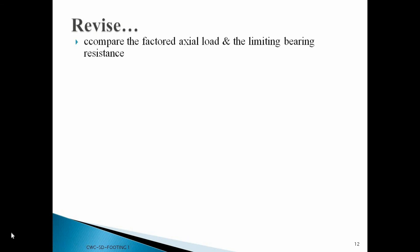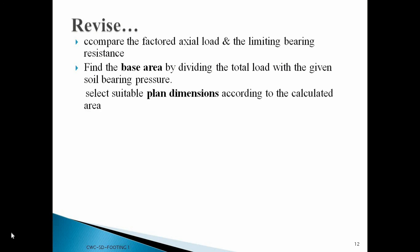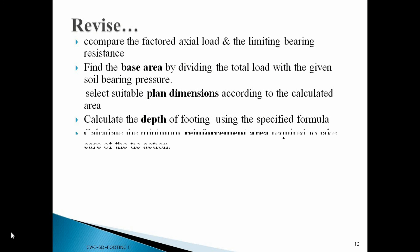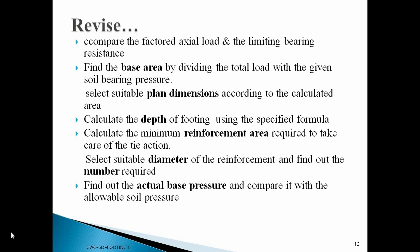Let me list out the steps once more. First, compare the factored axial load with the limiting bearing resistance to check the adaptability of plain concrete footing. Second, find the base area required by dividing the total load by the given soil bearing pressure, then select suitable plan dimensions. Next, calculate the depth of footing using the specified formula. Then calculate the minimum reinforcement area required for tie action, and select the suitable bar diameter and number of bars. Finally, find the actual base pressure and compare it with the allowable soil bearing pressure. If the design is safe, proceed with the detailing.